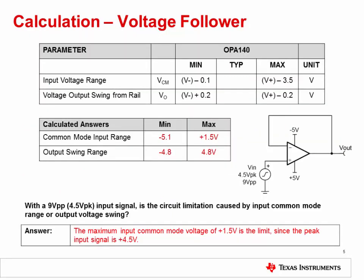This circuit uses the OPA140. In order to perform the calculations, you need to know the input voltage range and voltage output swing values for that device. Those values are given here. Enter your answers in the table in the middle of the slide. The solutions are already provided to allow you to check your work. Also answer the question at the bottom of the slide — again, the solution is provided.